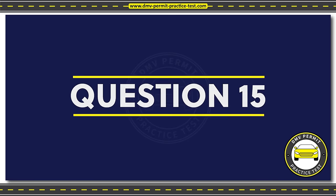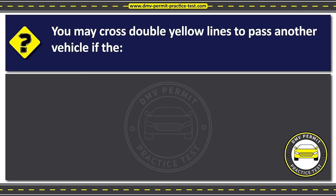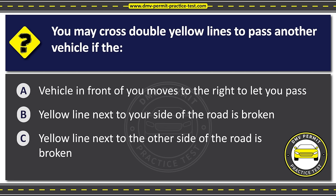Question fifteen. You may cross double yellow lines to pass another vehicle if the Option A: Vehicle in front of you moves to the right to let you pass. Option B: Yellow line next to your side of the road is broken. Option C: Yellow line next to the other side of the road is broken. The correct answer is Option B: Yellow line next to your side of the road is broken.